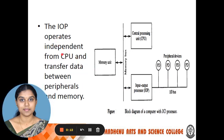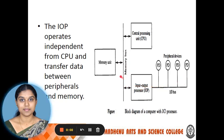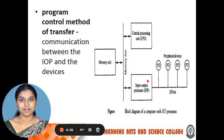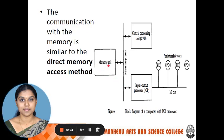The IOP operates independently from the CPU and transfers data between peripheral devices and memory. Through this path, the IOP passes data from peripheral devices to the memory unit and vice versa. The input-output processor is totally independent from the CPU because the CPU is not involved while DMA mode is active. The communication between the peripheral devices and the IOP is called the program control method, while the communication between peripheral devices and memory through the IOP is called the direct memory access method.